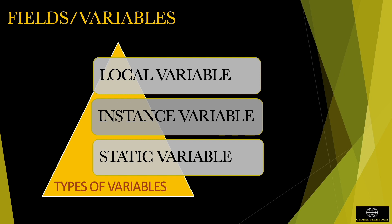A variable which is declared and used inside the body of methods, constructors or blocks is called local variable. Local variables must be assigned a value at the time of creating.